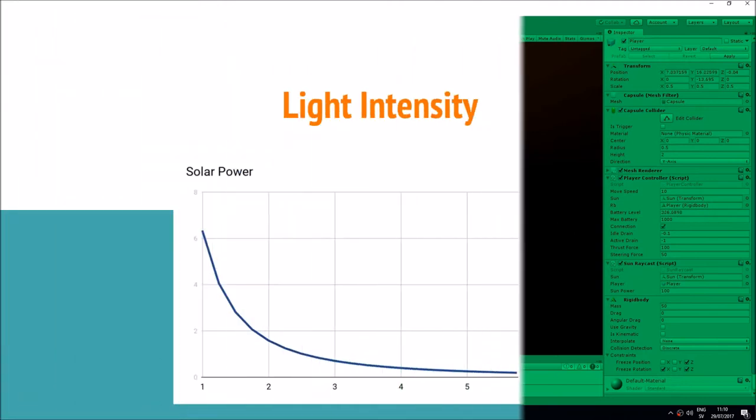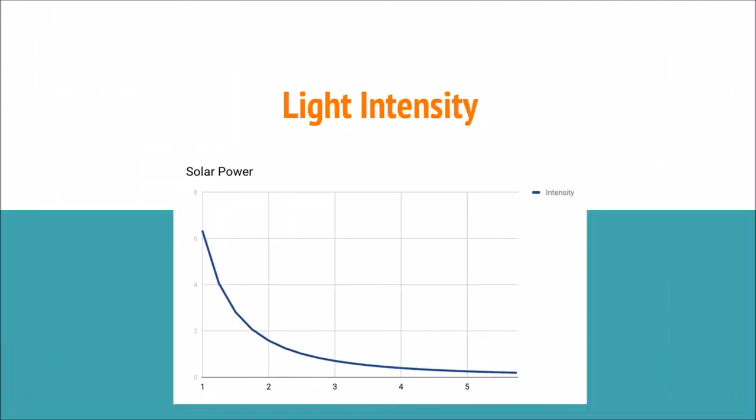Then we had to take a look at the light intensity. The further away you are from the sun, the less power you will get with your solar panels. So if you get really close to the sun you'll get a lot of power, but if you go further away in the solar system you'll get less and less power. This is the same calculations as for gravity.